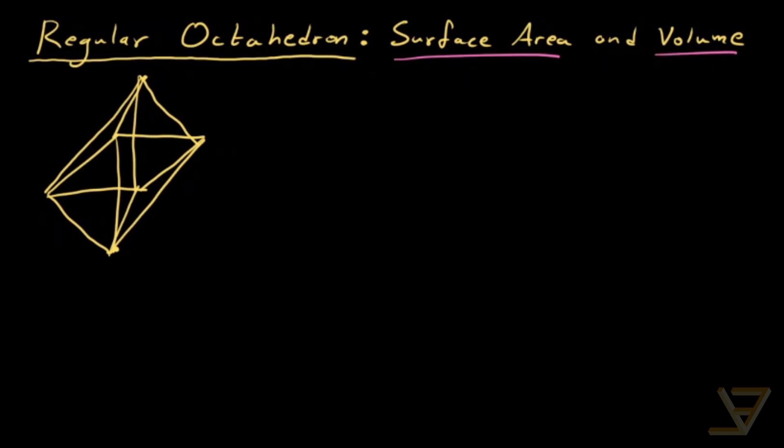What we know is that each of the eight triangles is an equilateral triangle, and the area of an equilateral triangle with side length s is equal to square root of three s squared over four. So all we have to do is do eight times the area, and we get two square root of three s squared. And that is the surface area of the regular octahedron.